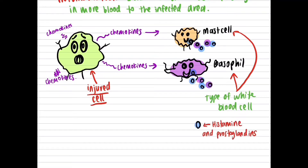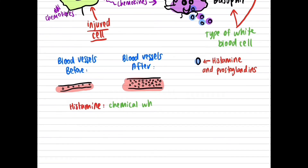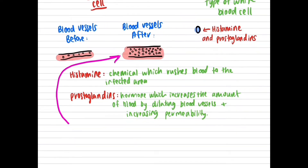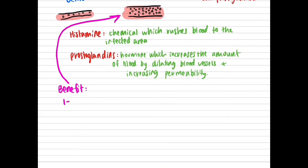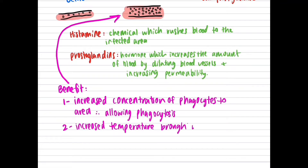Histamine is a chemical which rushes blood to the infected area, and prostaglandin increases the amount of blood by dilating vessels and increasing permeability. As a result, more blood cells move to the infected area, causing two things: one — an increased concentration of phagocytes which kill the pathogen through phagocytosis; two — an increase in temperature due to more heat from blood vessels undergoing cellular respiration, which is a heat-releasing reaction.